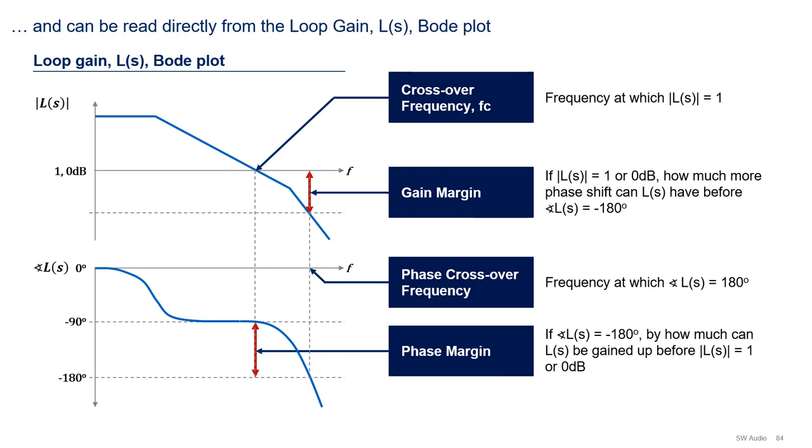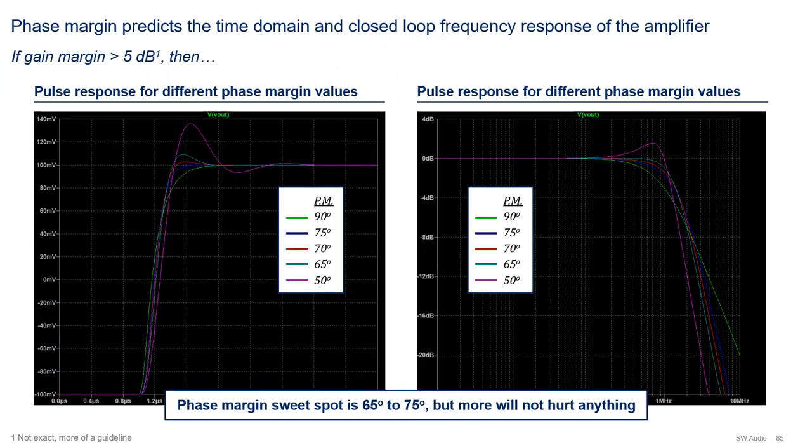Luckily, we do not have to compute the phase and gain margins to understand our level of stability. They can be read directly from the loop gain Bode plot. For phase margin, first find the crossover frequency, in other words, the frequency where the magnitude of L(s) falls to 1. Then, phase margin is 180 minus the phase of L(s) at the crossover frequency. For gain margin, first find the phase crossover frequency, in other words, the frequency where the phase of L(s) equals -180 degrees. Then, gain margin is 1 over the gain at the phase crossover frequency, or if expressed in dB, it is minus the gain of L(s).